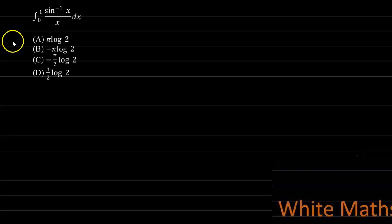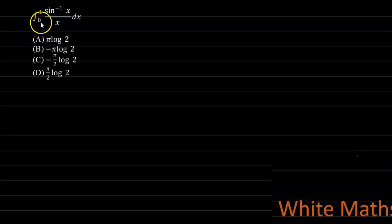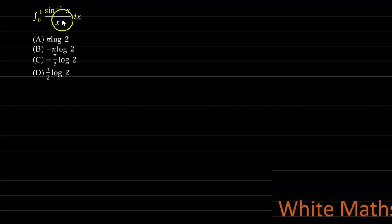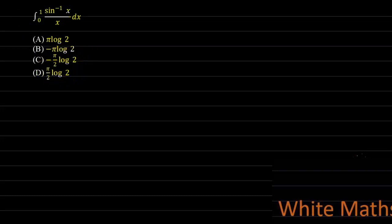Hello students. In this section we will solve a question from the topic of integrals, specifically the sub-topic evaluation of integrals by UV rules. The integral is limit 0 to 1 of sine inverse x divided by x dx, and the options are pi log 2, minus pi log 2, minus pi by 2 log 2, and pi by 2 log 2.